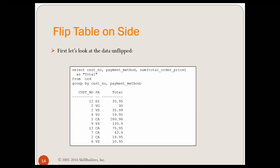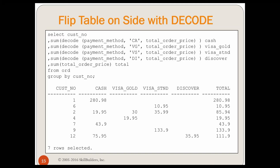So how are we going to flip it? Let's flip the table on the side with the DECODE — just for historical purposes; the CASE will be pretty much the same. What I'm going to do is decode the payment method. If it's cash, I'm not getting a one and summing them — I'm getting the total order price. If it's not cash, the decode says it's not cash, so I don't get the total order price. There's no else clause, so it's null.